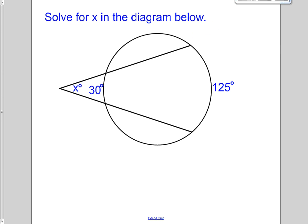And then this is our third case where we've got our vertex on the outside of the circle. And this is the one where we're going to have to subtract. So I've got these are my two arcs, A and B. And x is going to be 125 minus 30 divided by 2.